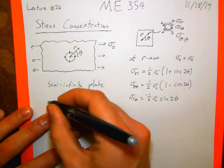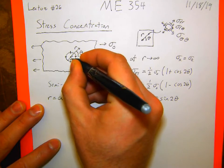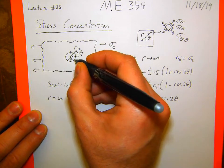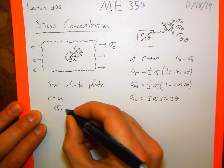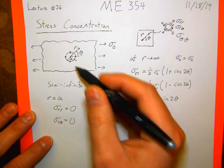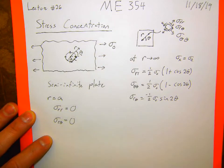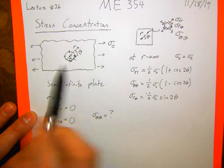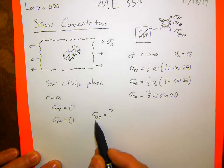The other boundary condition is at r equal to a — the edge of the hole, which has some radius a. Because there's a free boundary condition here, I can't have anything pulling or pushing in the radial direction, so sigma_r = 0 and sigma_r_theta = 0 there. But because I have a continuous circle, I can still be pushing and pulling along the direction of the circle, so I have some sigma_theta_theta, and that's what I need to figure out.